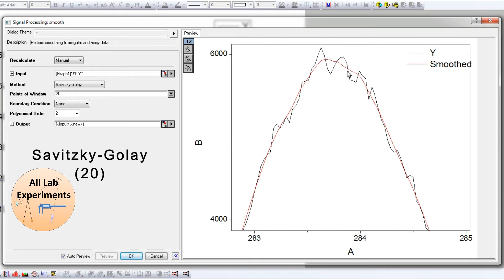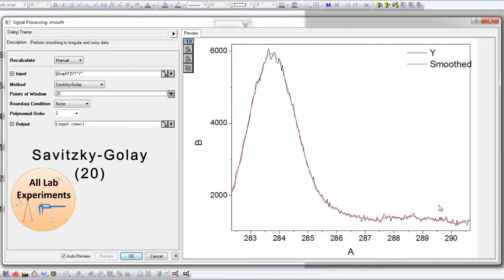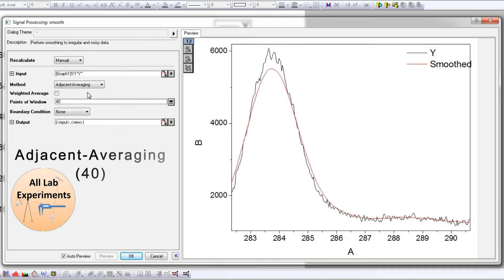If we check Savitzky-Golay, we will find that now this is getting much smoother than earlier, and the peak height is almost the same. Similarly, the second part is also smooth. Now if I increase this to 40, what will happen?